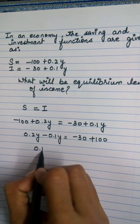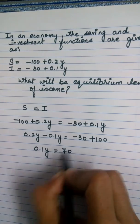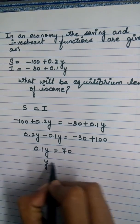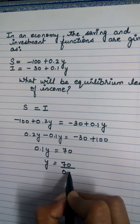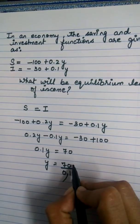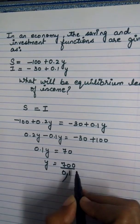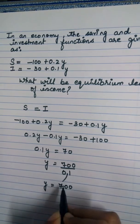So 0.1Y equals 100 minus 30, which equals 70. Y equals 70 divided by 0.1. If we remove this decimal point, one zero will increase, so Y will be 700.